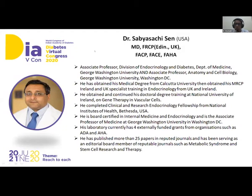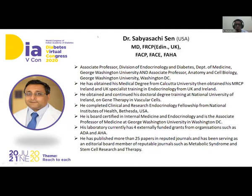And now he went to NIH, and from NIH he is now in the capital of the United States, Washington D.C., at the George Washington University, and has done a lot of elegant work in diabetes, heart disease. His current area of interest is also in vascular cells and gene therapy, where he got his doctorate degree. And Sambayasaji Chen, thanks a ton for allowing us to give us the U.S. perspective of COVID and diabetes.